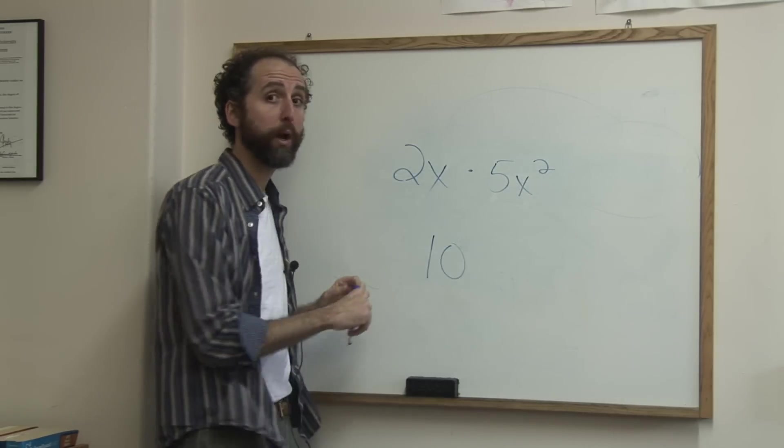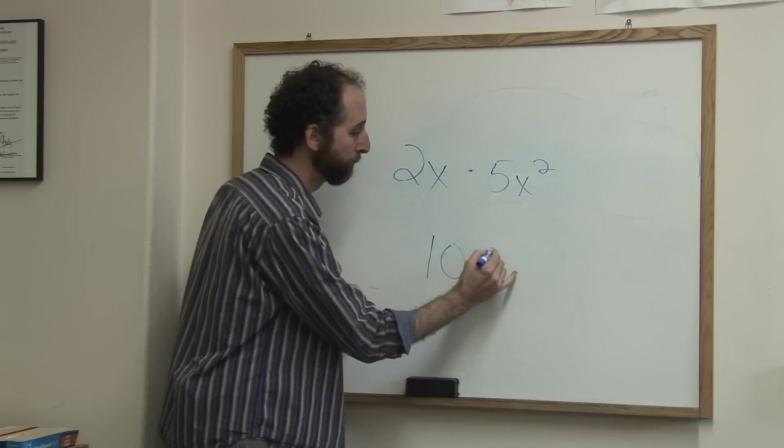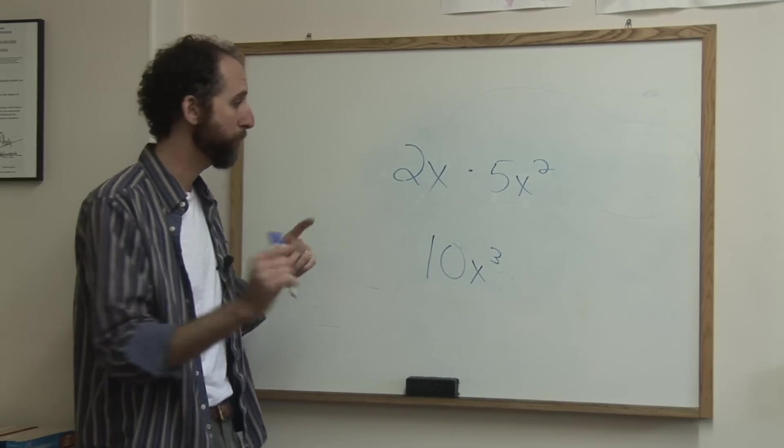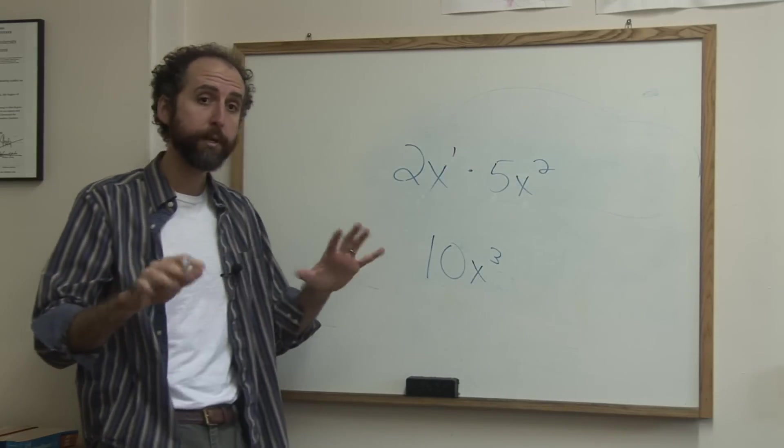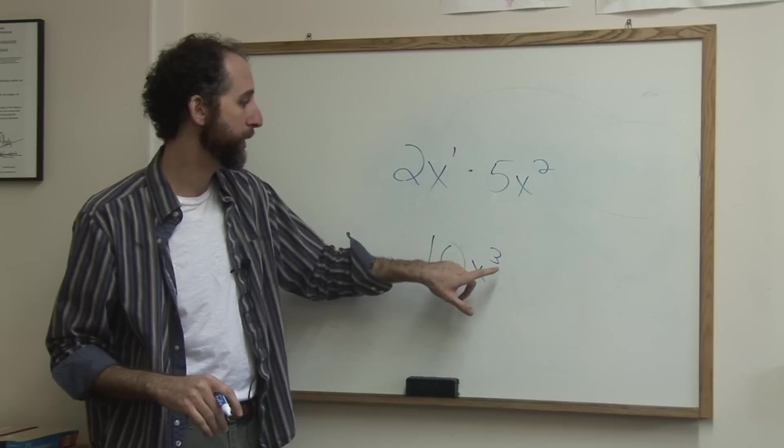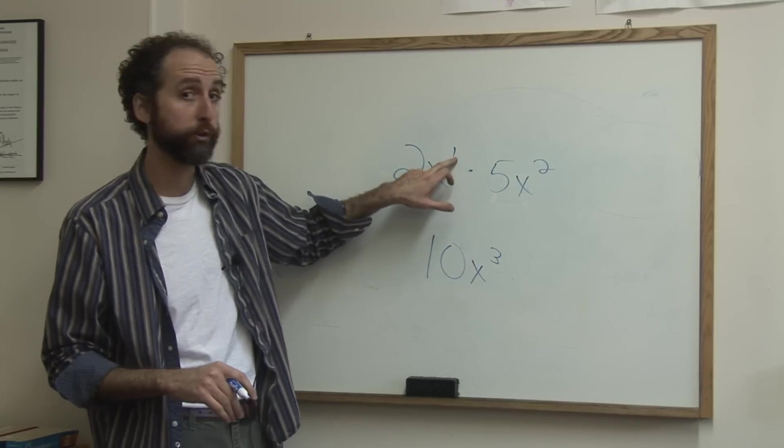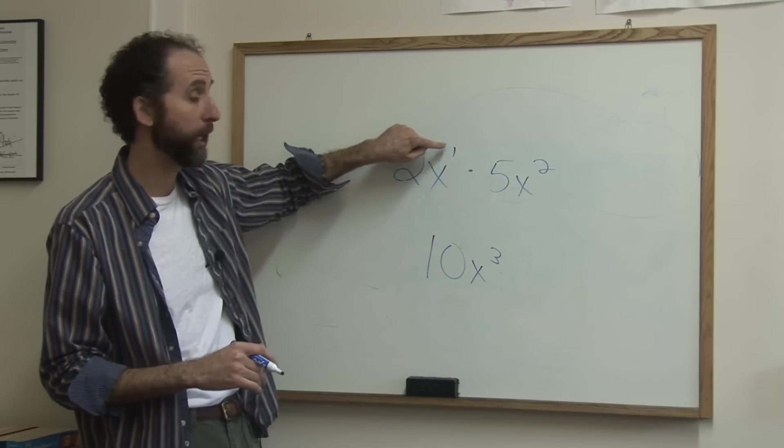x times x squared is x cubed. Now the most important thing there is remember that x by itself really means x to the first. A lot of times I see people say x times x squared is x squared because they forget there's a 1 there. But an x on its own is really x to the first.